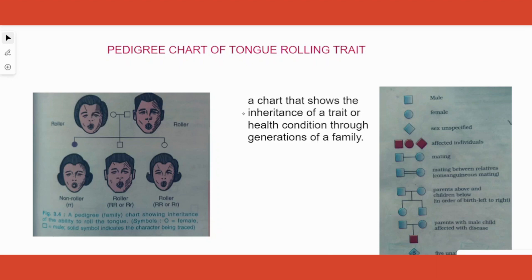It is not at all a hazardous condition. If you're not a tongue roller it doesn't affect your life quality in any way. However, this is the example given in our textbook so we are learning that. First and foremost, what is meant by a pedigree chart? A chart that shows the inheritance of a trait or health condition through generations of family.